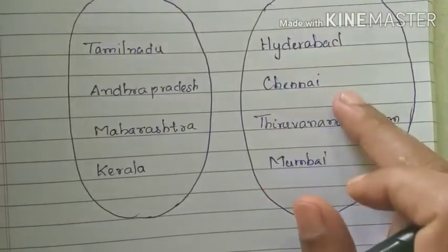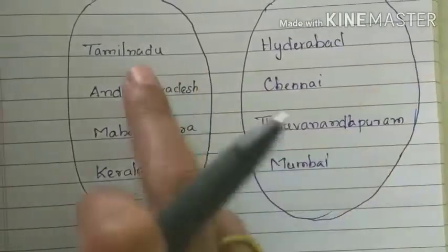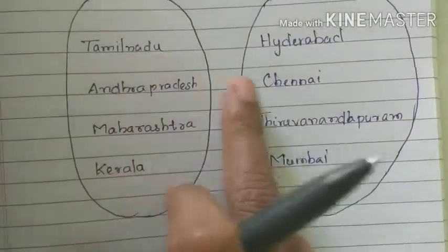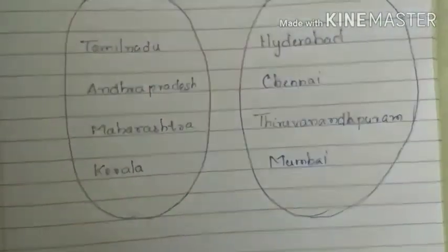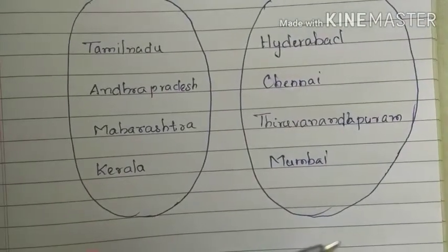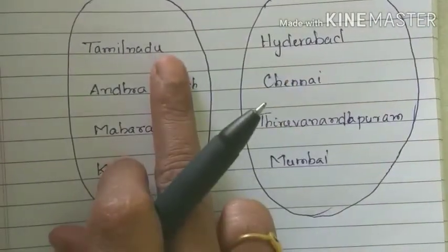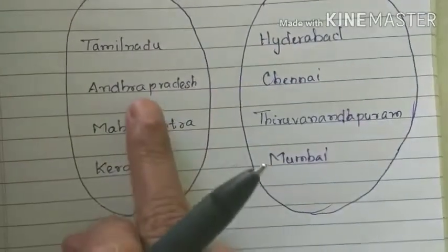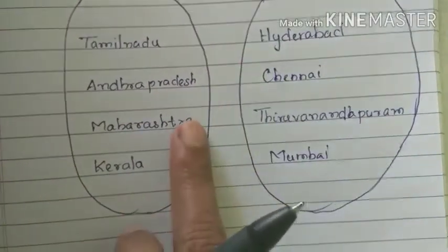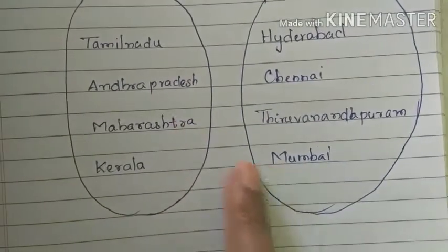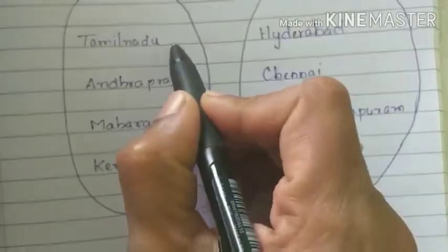So Hyderabad, Chennai, Thiruvananthapuram, Mumbai. If you don't know about this, we have a connection with Tamil Nadu and Chennai. What is the connection? Chennai is the capital of Tamil Nadu. Andhra Pradesh's capital is Hyderabad, Maharashtra's capital is Mumbai, and Kerala's capital is Thiruvananthapuram. So this is the relation.